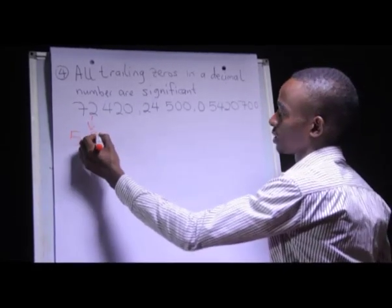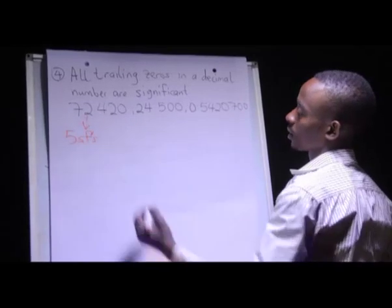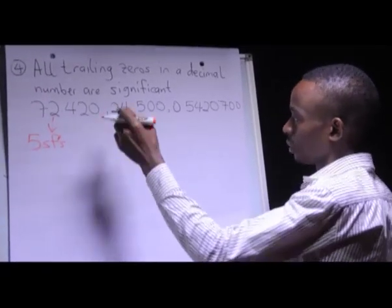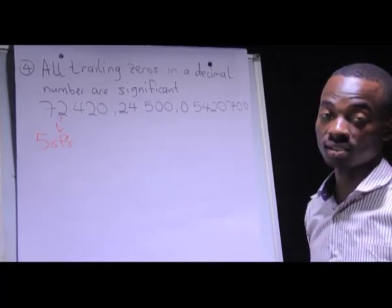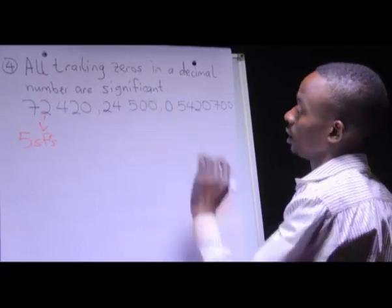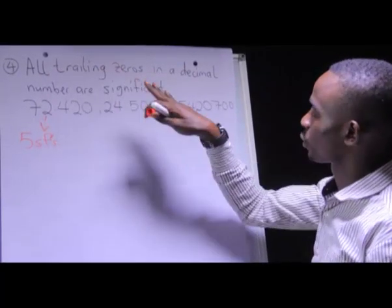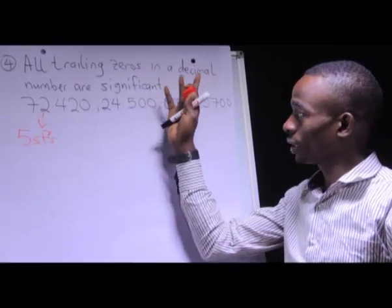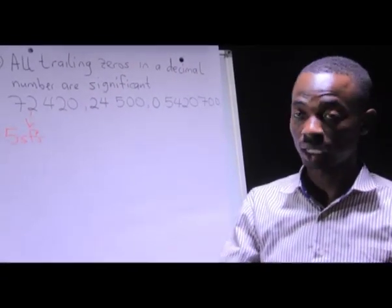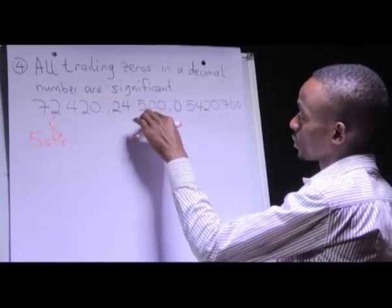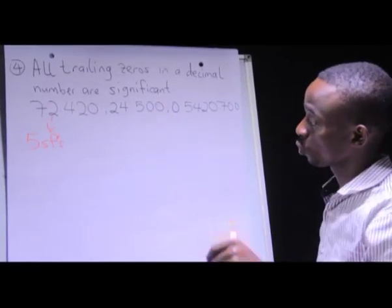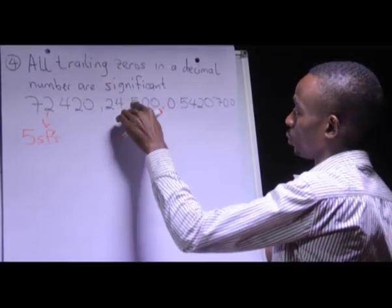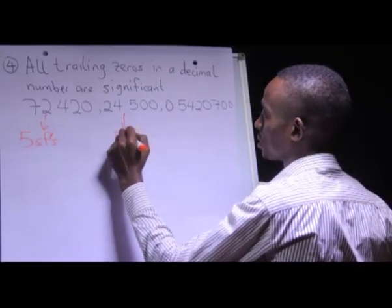Moving to 24.500: the digits 2, 4, and 5 are significant based on condition one — all non-zero digits are significant. Now for the two trailing zeros: condition four tells us all trailing zeros in a decimal number are significant. These zeros are at the very end of a decimal number, so they are also significant. Counting: 1, 2, 3, 4, and 5 — so there are 5 significant figures.